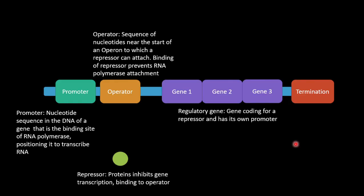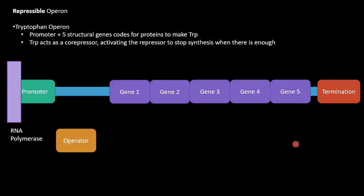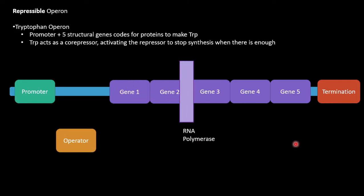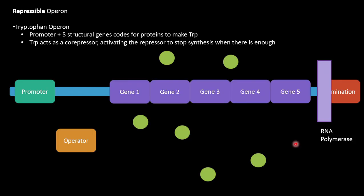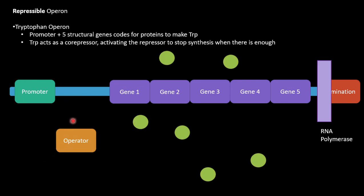Here's a repressible operon. In this case, the inhibitor stops translation from occurring. When there's a lack of tryptophan in the surrounding, there will be none to repress the operator, allowing for the production of TRP molecules. And this goes through it, and basically these TRP molecules would eventually bond back to the operator, causing the operator to go back and stop production.